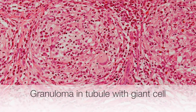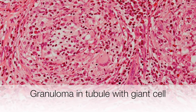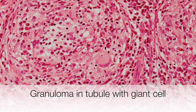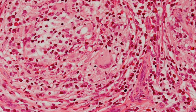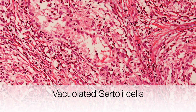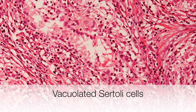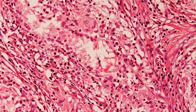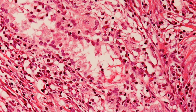Here is a high power view of a granuloma containing a nice example of a multinucleate giant cell. And finally, here is a picture showing the vacuolated Sertoli cells, one of the features of granulomatous orchitis.